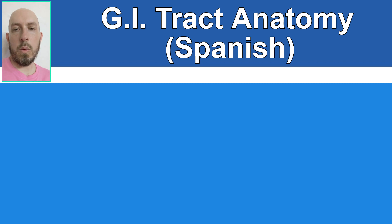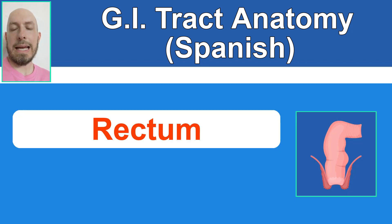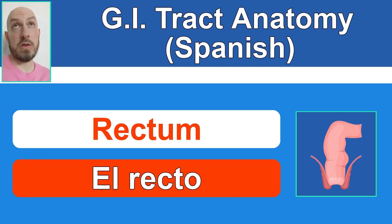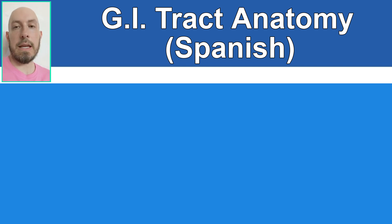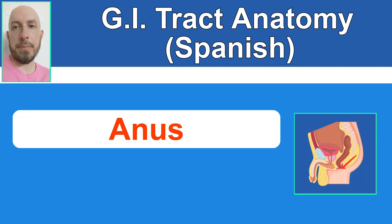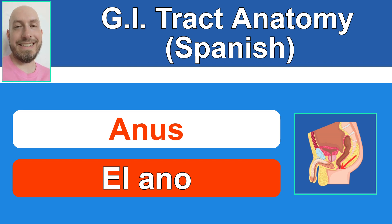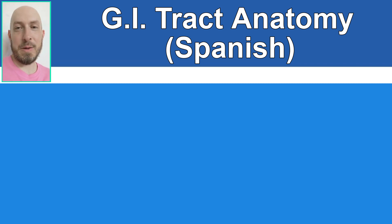The next one is rectum: El recto. El recto. 'Recto' could be a little confusing since it also means 'straight' — it just happens to have multiple meanings. And what about anus? El ano. El ano. That word is the reason why you always need to put the tilde on the ñ when you write 'año,' and you need to pronounce it correctly so those words don't end up sounding the same.